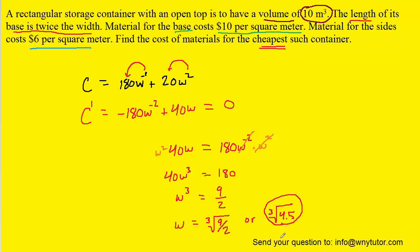Now this is what we call a critical number. We have to confirm that this indeed minimizes the cost of materials. So to confirm that, we could use the second derivative test. So all that means is we have to calculate the second derivative. So c double prime would become positive 360w to the negative 3 plus 40. And the idea is the following.